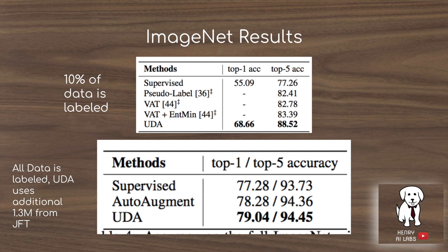The bottom results show how this technique might scale. They add 1.3 million additional images from their JFT dataset. It's interesting to consider what would happen with all 300 million JFT images or something like Facebook/Instagram weakly supervised data. Already, this approach is ahead of auto-augment by almost a full percent on top-1 accuracy and much higher than supervised learning alone on both metrics.